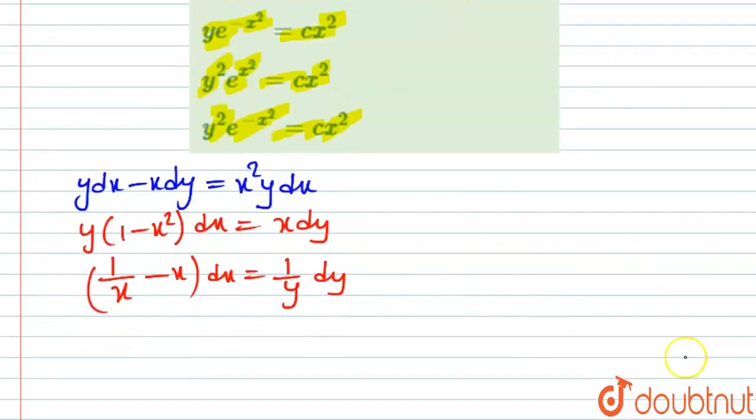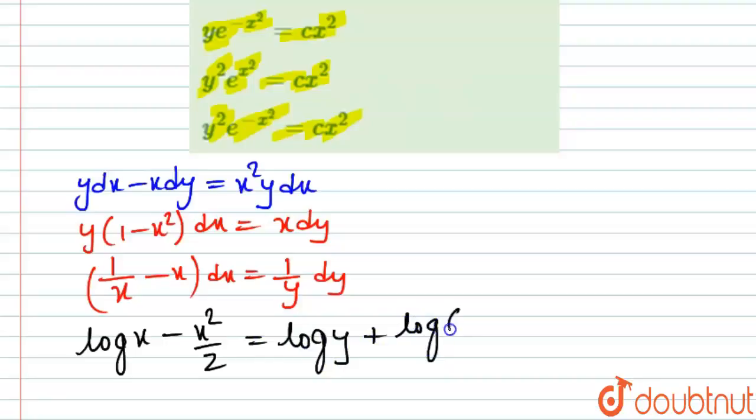I am integrating both sides with respect to the respective variables. This becomes log of x minus x square upon 2 because differential equation of x square upon 2 that is x and differential equation of log x is 1 upon x that is equal to log of y plus a constant. We can take this constant as log of c.